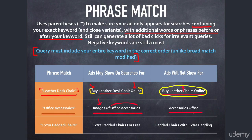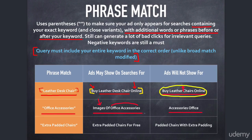People search in lots of different ways — someone looking for office accessories might type "accessories office." This is a situation where you might want a variation as a broad match modified keyword: plus office plus accessories. That way "accessories office" would be eligible under broad match modified, but it will not be eligible under phrase match.